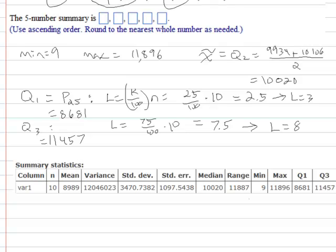There is our min, which is 9, our max, 11,896, Q1 is 8681, Q3 is 11,437, and median is 10,020. StatCrunch is, of course, a little bit faster. But this is a simple enough concept I think it is worth at least looking at to make sure we understand the concept. When you're doing your homework or whatever, feel free to use StatCrunch. It's fine. It does save you some time.